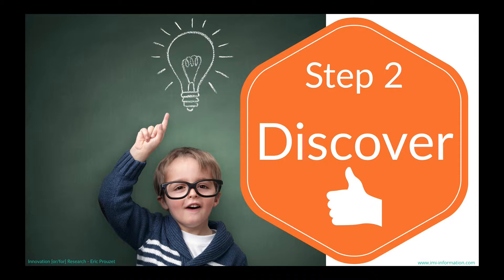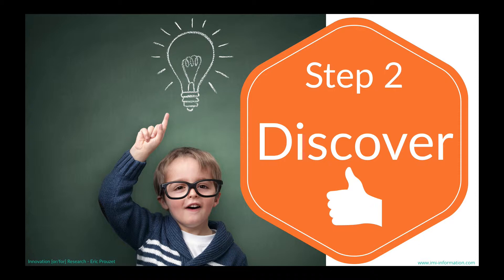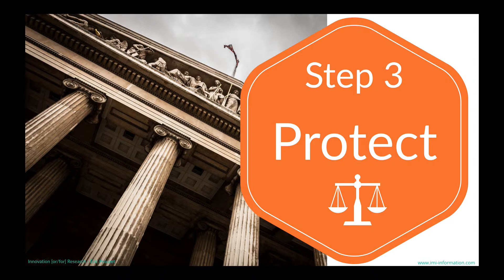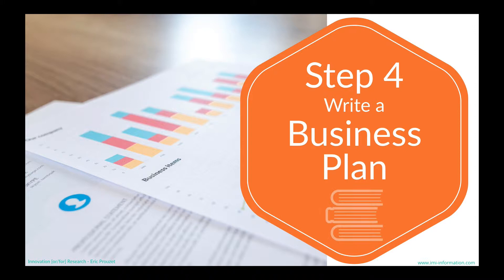What you do next is to protect your discovery, because you don't want anybody to steal your invention, your process. So you go and file a patent to protect it. When you have your discovery protected, you must write a business plan — a document that will explain what you will do within six months, one year, two years: your development, your costs, your revenue, how many people you will hire, what will be the market, how much of the market you will manage to reach, et cetera.